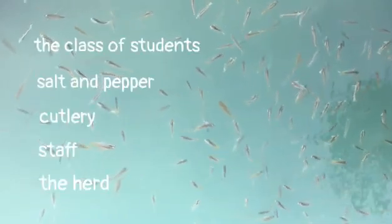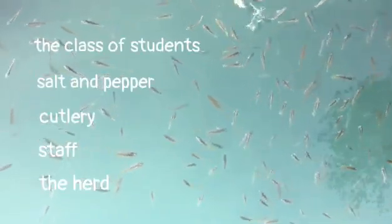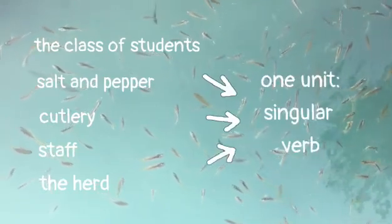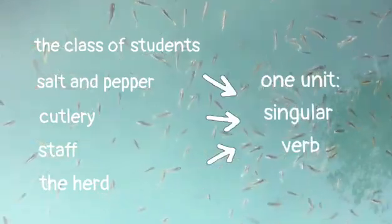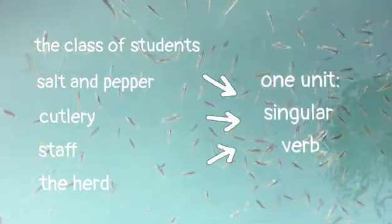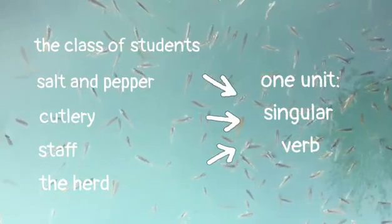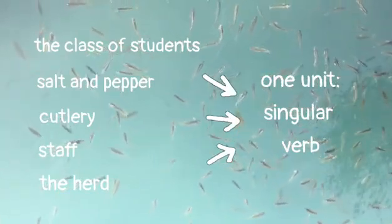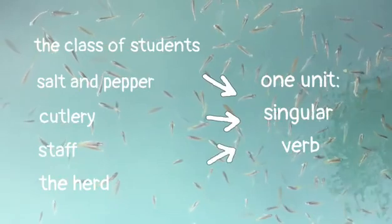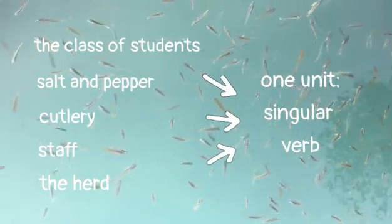Sometimes the subject looks like it's plural, although it is only one unit. For example: 'The class of students is late for lessons today.' 'The salt and pepper is on the table.' 'The staff is all sick.' And 'the herd of cattle is lost on the mountain.'